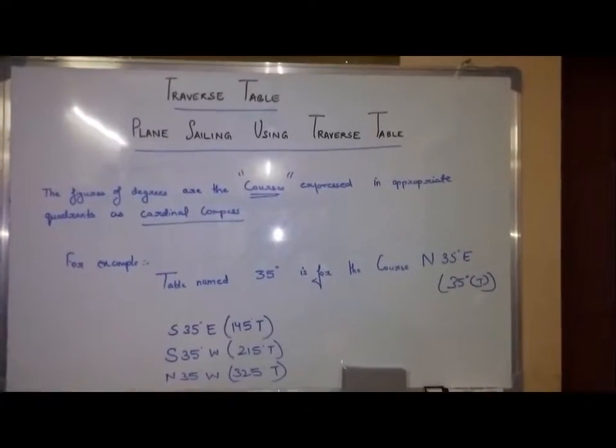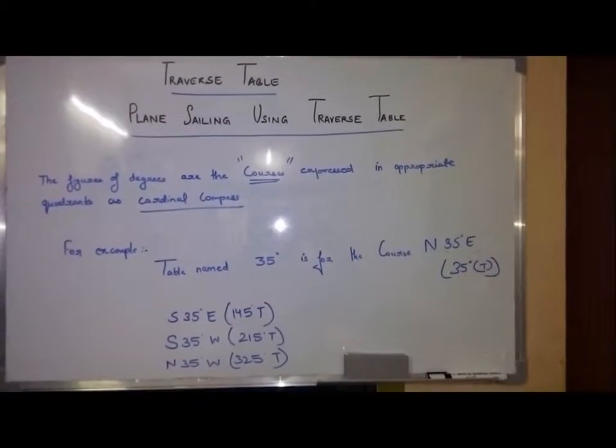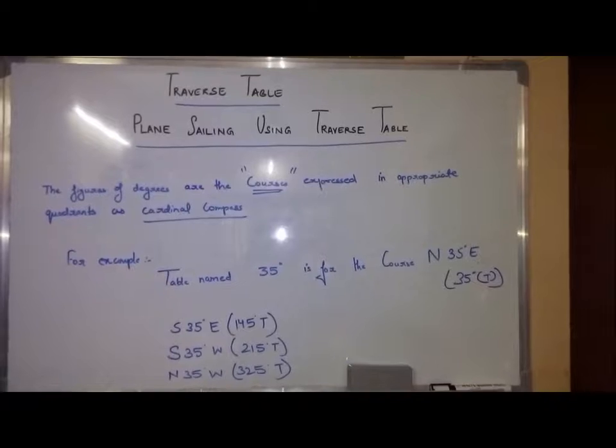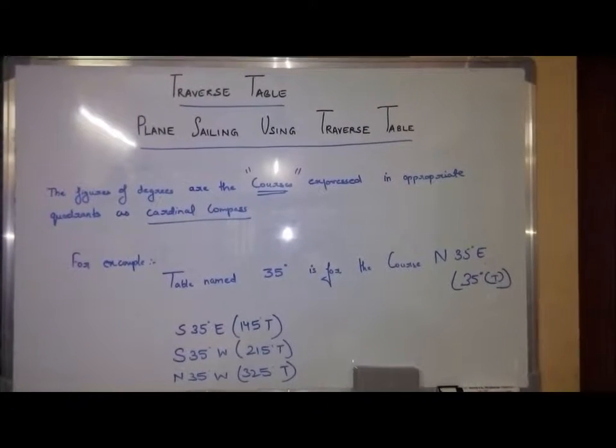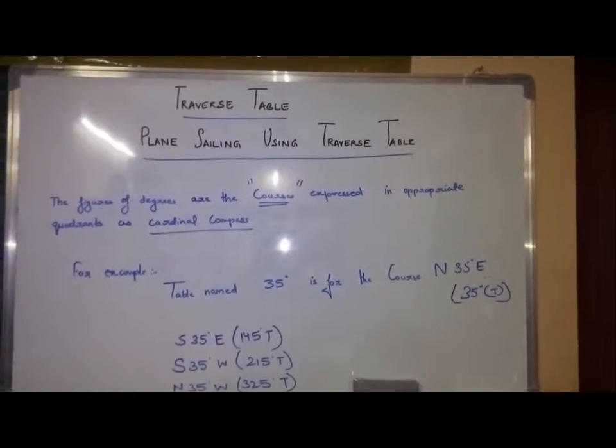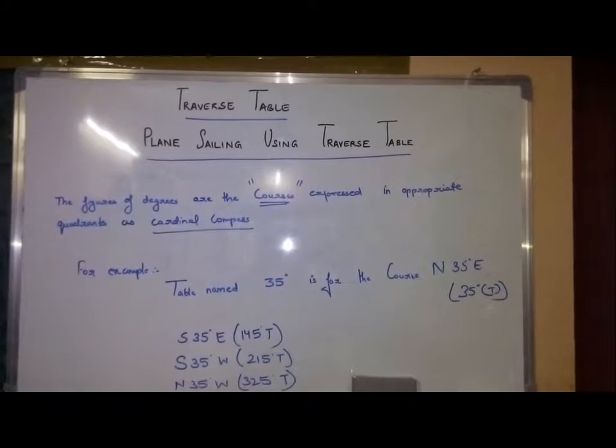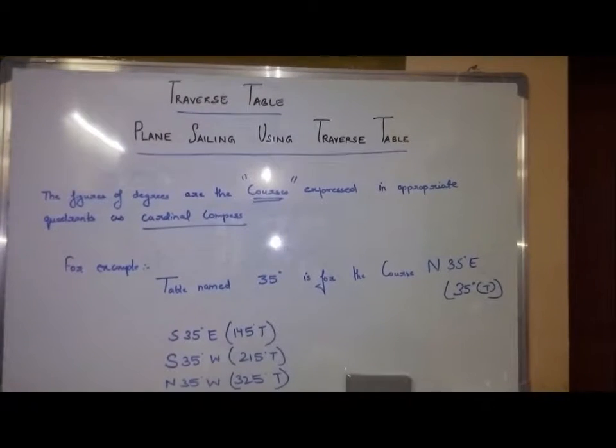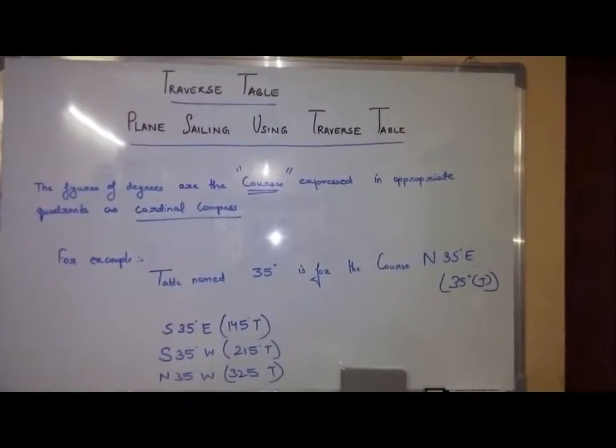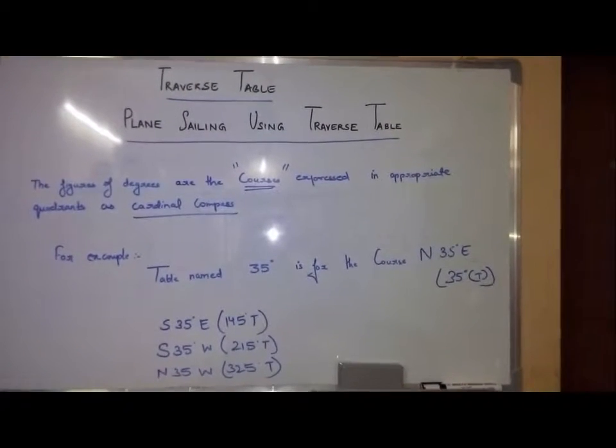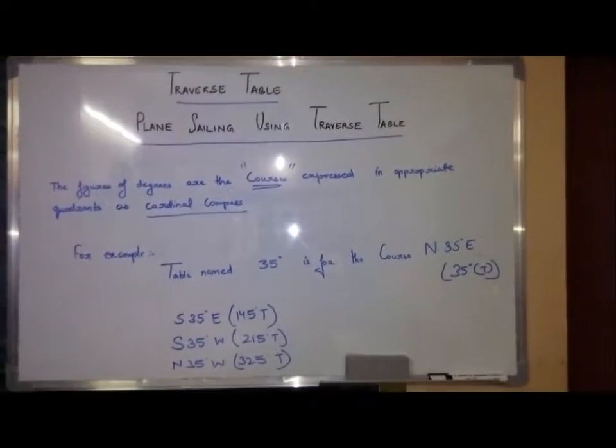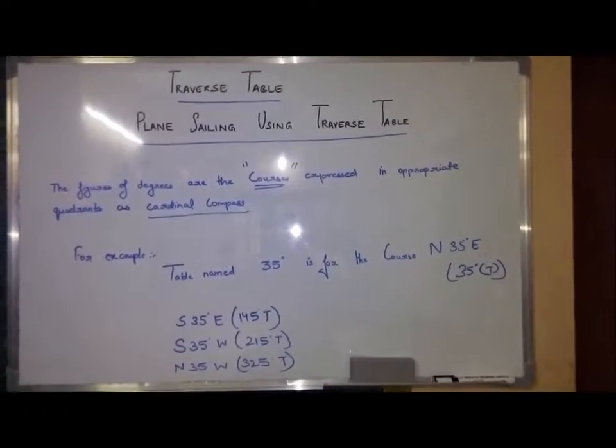Plane sailing using traverse tables. The figures of degrees are the courses expressed in appropriate coordinates as cardinal compass. That means on the table at the top you will be having something in degrees, for example 35 degrees. In plane sailing it will be called as the courses, while in parallel sailing it will be known as the latitude.